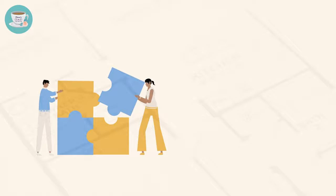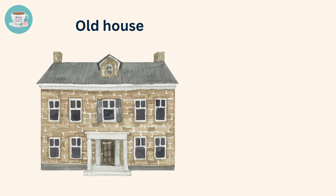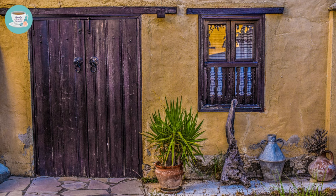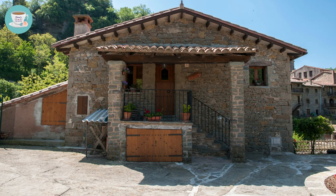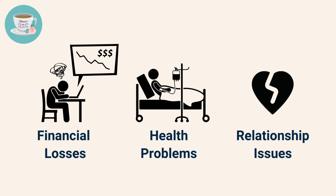Old house. In feng shui, the flow of energy changes over time. An old house may indicate that its time has passed and it has entered a stage of declining qi. Therefore, it's difficult to accumulate wealth and good fortune in such a space. The declining qi of an old house can lead to a variety of negative consequences, including financial losses, health problems and relationship issues.